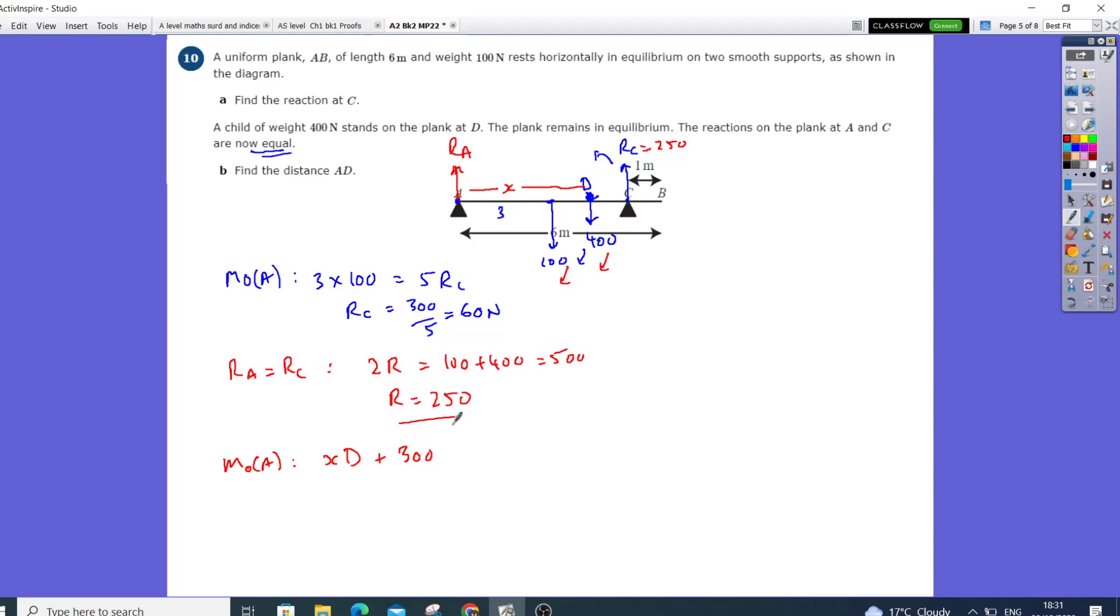going down clockwise. And since it remains in equilibrium, that's going to equal to, and this distance RC is 5 meters from there, and that's going to be 250 from A.